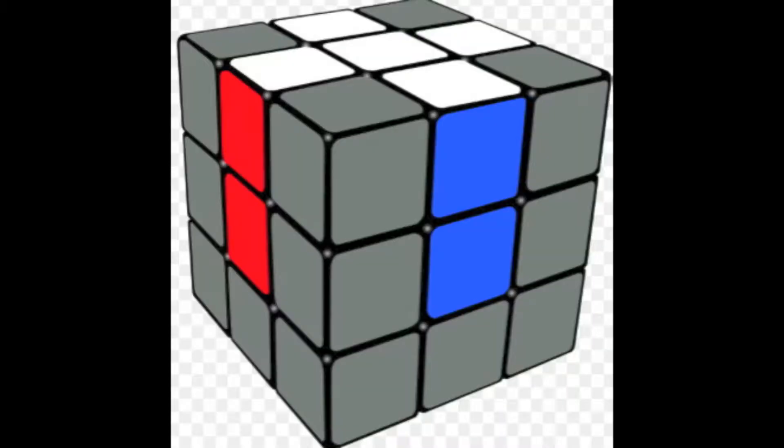When you receive the cube, you want to look for the anchored cross. The most important thing is to make sure that cross is facing the ceiling. With the cross facing the ceiling, there are three center colors you want to focus on: the one facing you, the one to your right, and the one facing the sky.